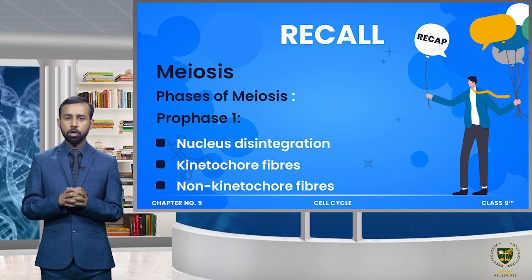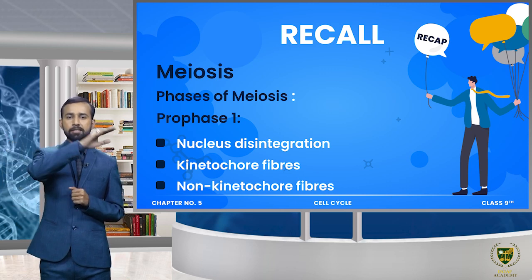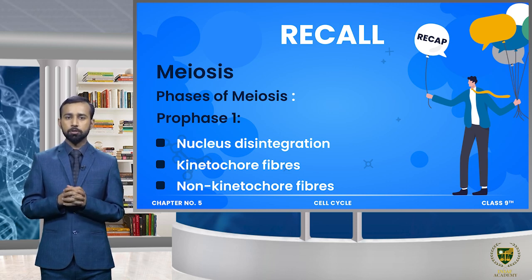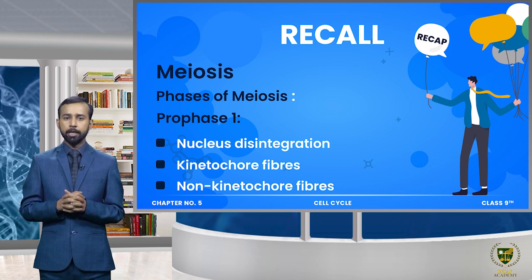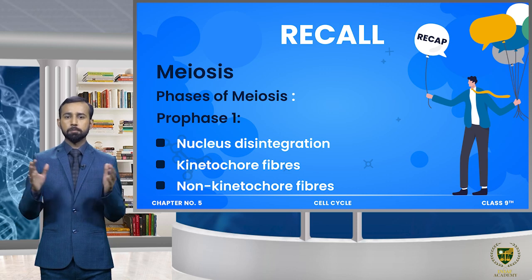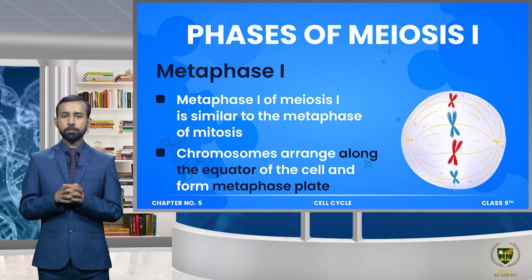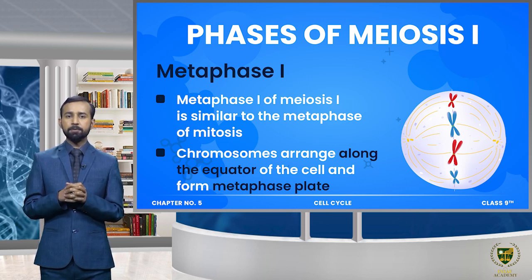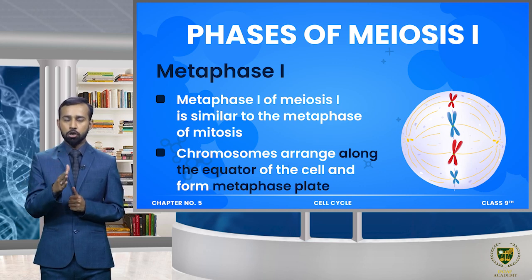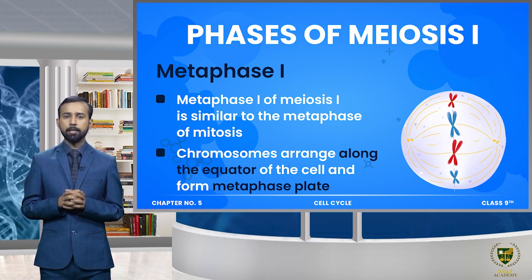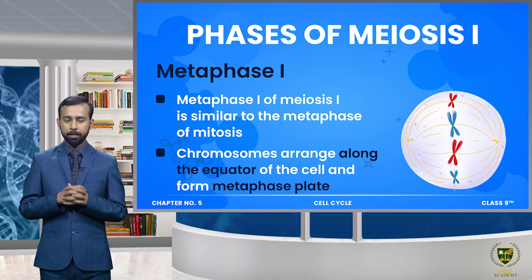یہاں پہ کچھ non-kinetochore fibers بھی present ہوتے ہیں جو ایک centrosome سے دوسرے centrosome تک پہنچے ہوتے ہیں - یعنی وہ chromosome کے ساتھ attach نہیں ہوتے، وہ centrosome سے centrosome تک ہی elongate ہوتے ہیں۔ پھر chromosomes center میں align ہو جاتے ہیں اور spindle fibers کی formation اور chromosome کے kinetochore کے ساتھ attachment بھی ہو جاتی ہے۔ اب اگلی phase جو ہے وہ ہے metaphase 1۔ Metaphase 1 میں chromosomes cell کے equator پر along the equator line up ہوں گے - یہ ہے metaphase 1 کی stage۔